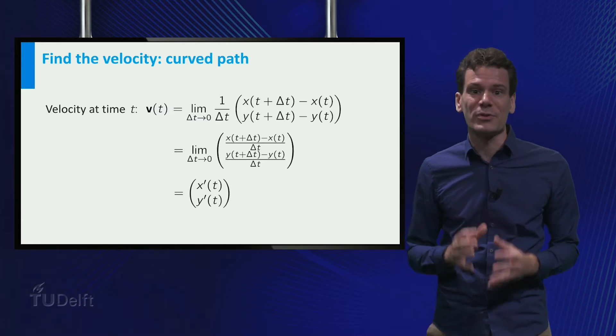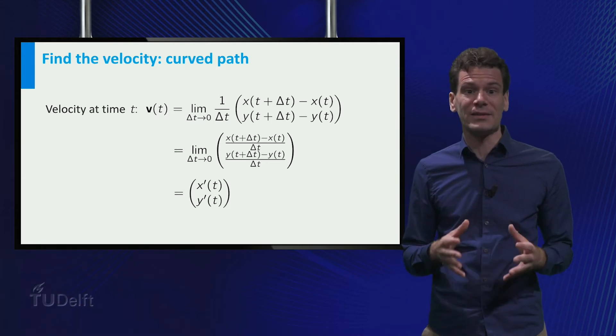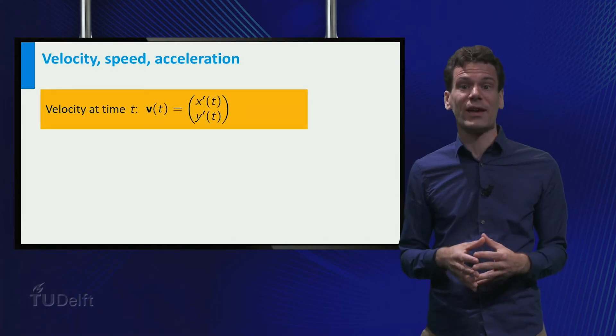This means that if you know the position as a function of time, it is easy to find the velocity vector at any time t. Just take the derivatives of the components of the position vector.